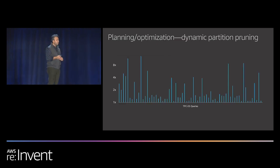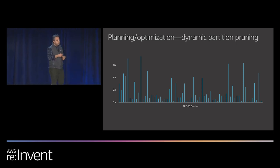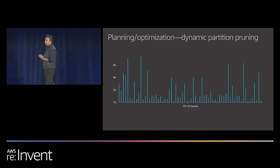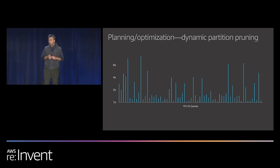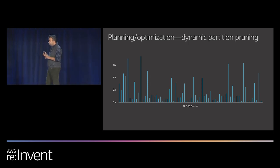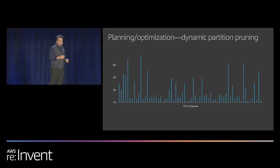There are other improvements as well. For example, we added improvements around dynamic partition pruning. Most of you from the database world probably understand this — we are reducing the amount of data we read based upon intelligent pruning of partitions on really large tables, and it adds significant performance improvement to both long and short-running queries. Again, 100% compatible with open-source APIs — we are not breaking anything. These are just query optimization techniques.